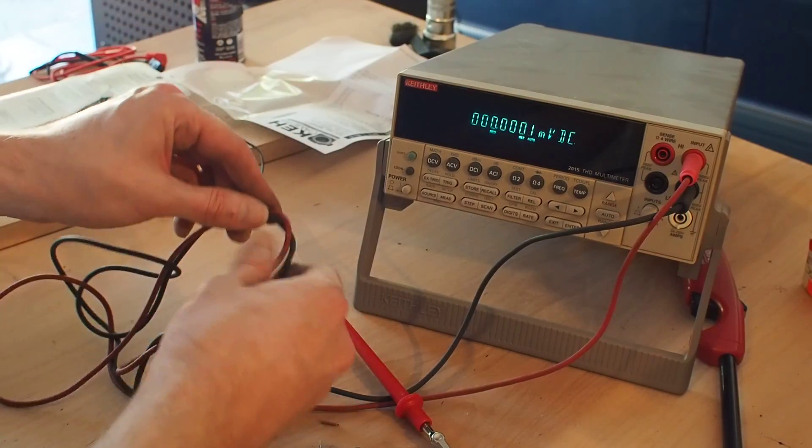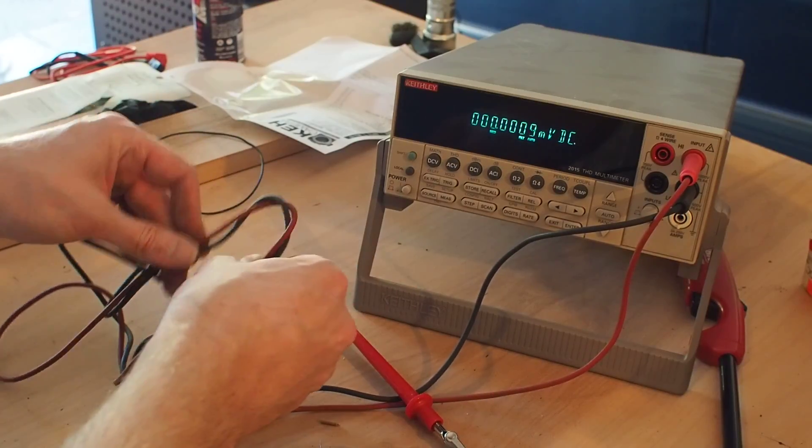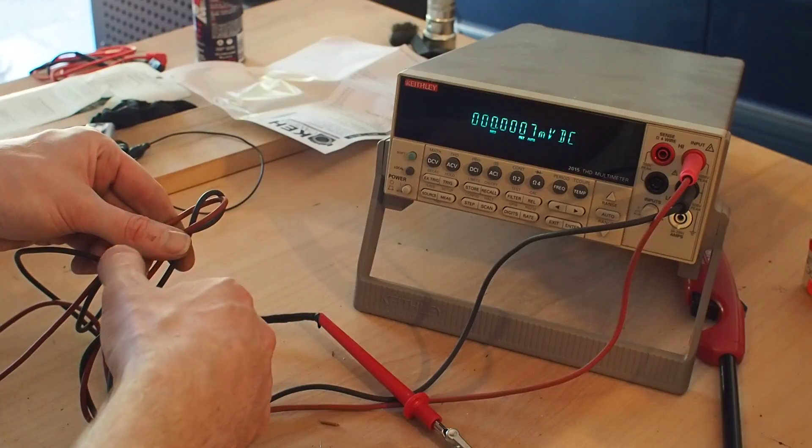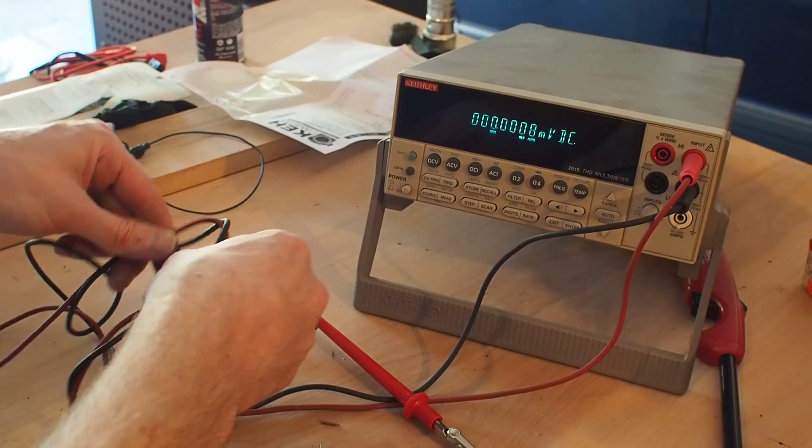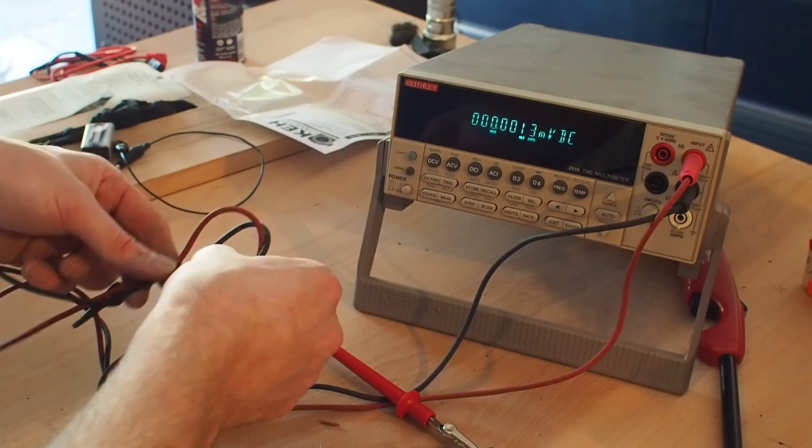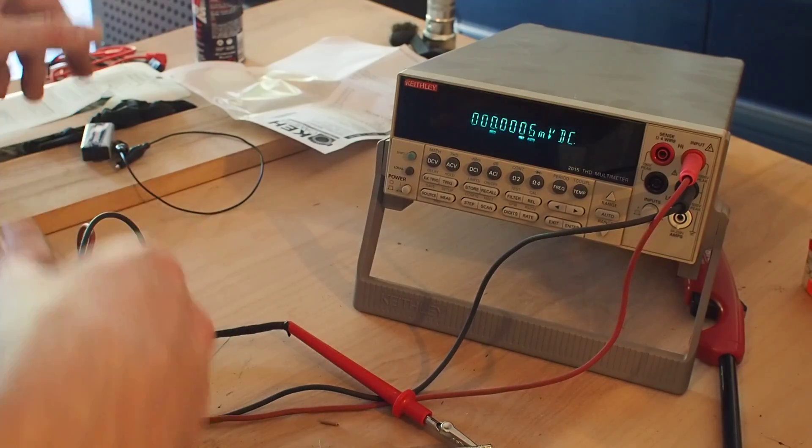And as you can see, if I kind of wiggle the wires around the test lead, there's a little motion on the voltage, but not really a whole lot. There's not really a lot of noise being generated by moving these test leads around.